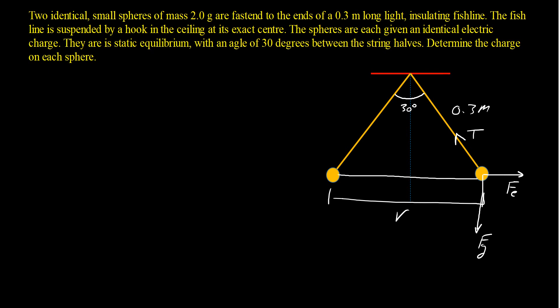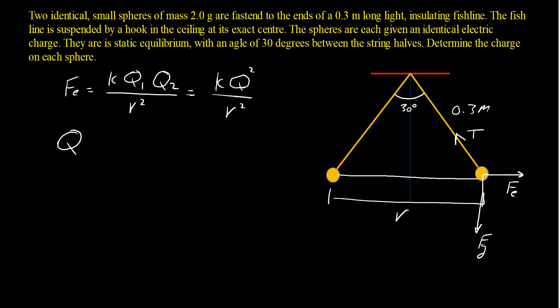Following Coulomb's law: electrostatic force equals k·q1·q2 over r². Since the charges are identical, that becomes k·q² over r². Rearranging, q equals the square root of (electrostatic force times r² divided by k). However, we don't yet know the electrostatic force or the distance r between the two charges, so we have a few missing pieces that we'll need to find step by step.